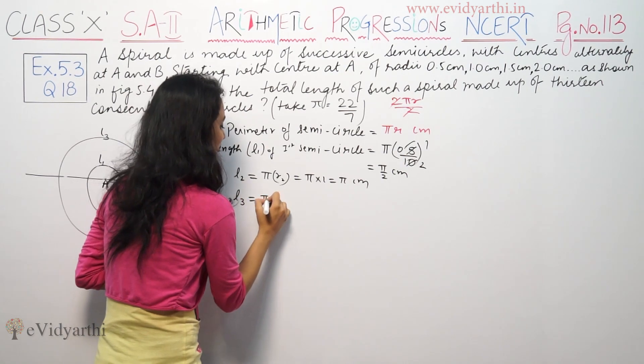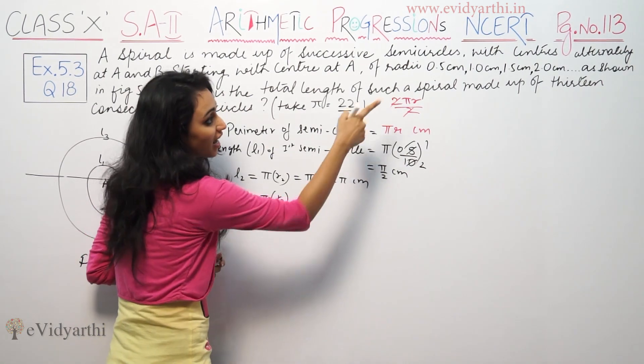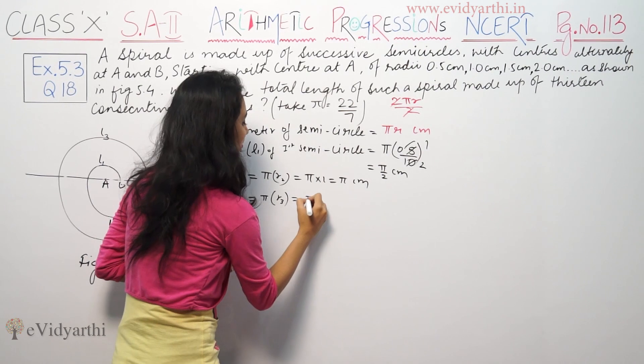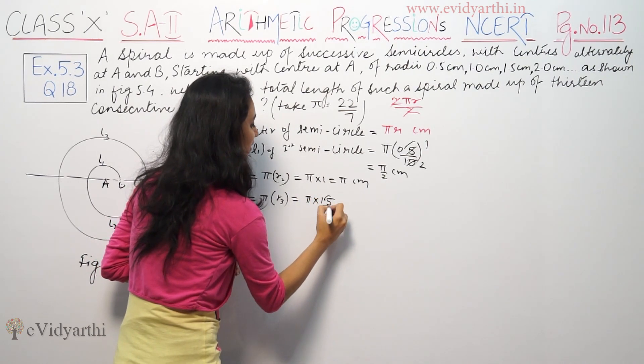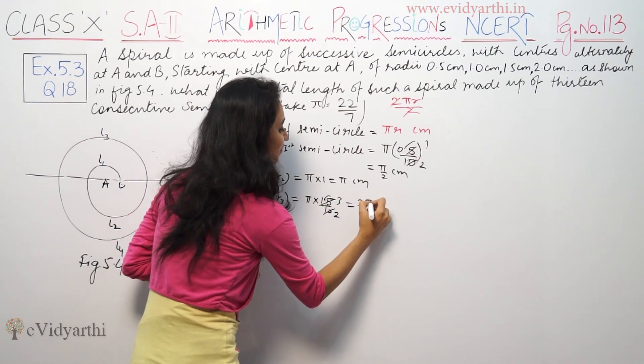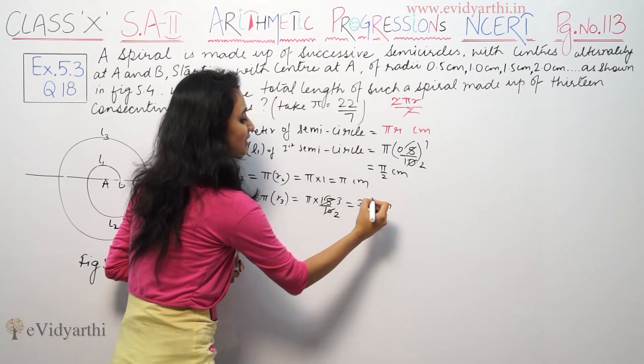Same with L3. πR3. R3 is 1.5, so π into 1.5, that means 3π/2 cm.